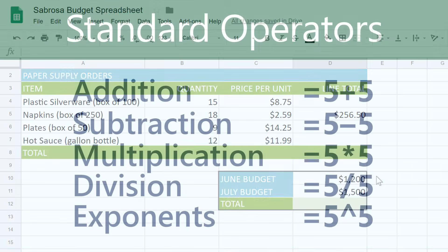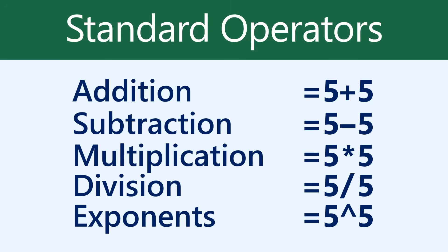Google Sheets uses standard operators for math equations: a plus sign for addition, a minus sign for subtraction, an asterisk for multiplication, a forward slash for division, and a caret for exponents.